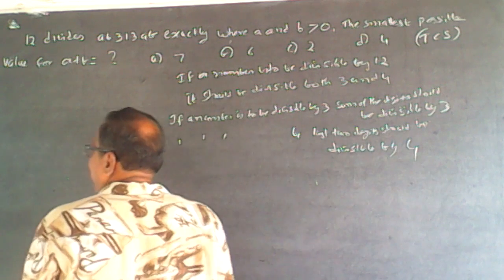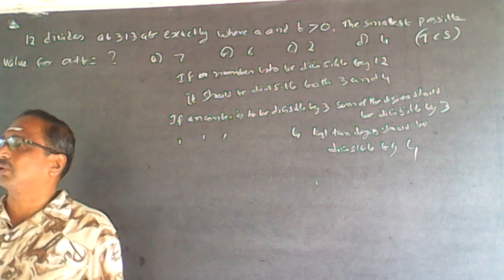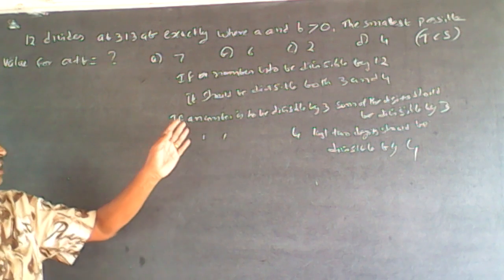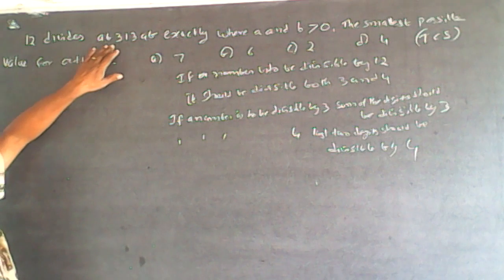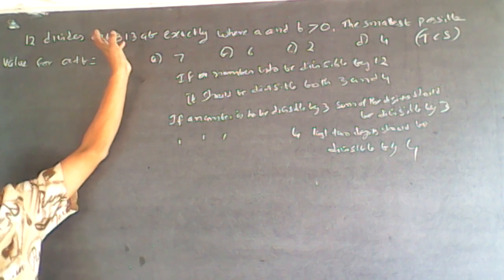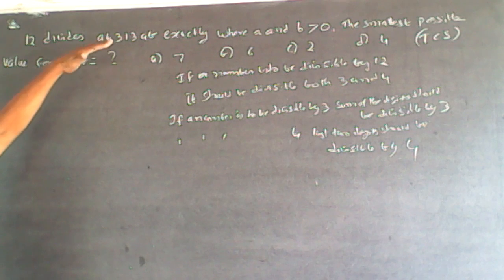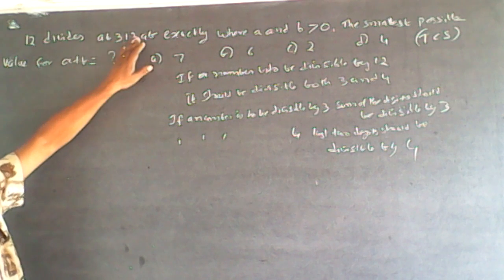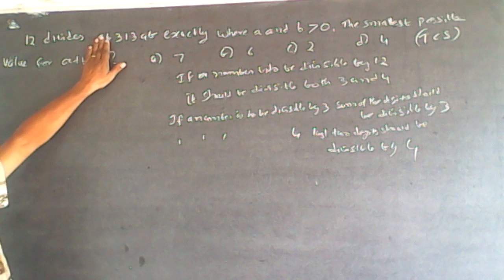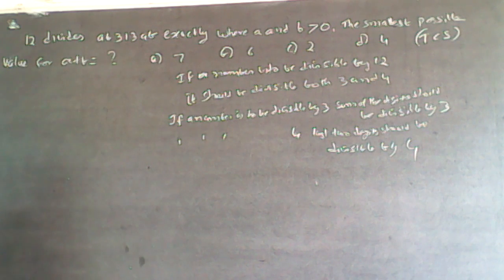The last 2 digits of AB313AB should be divisible by 4. Also, the sum of all the digits should be divisible by 3.